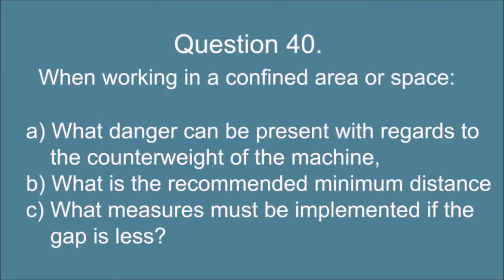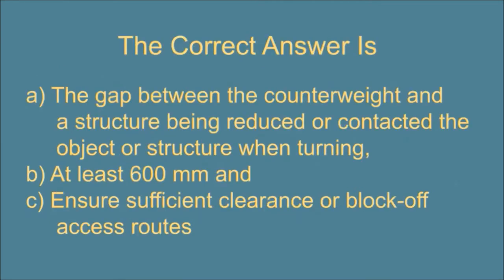Question 40. When working in a confined area or space, A. What danger can be present with regards to the counterweight of the machine? B. What is the recommended minimum distance? And C. What measures must be implemented if the gap is less? The correct answer is: A. The gap between the counterweight and a structure being reduced or contacted the object or structure when turning. B. At least 600 millimeters. And C. Ensure sufficient clearance or block off access routes.